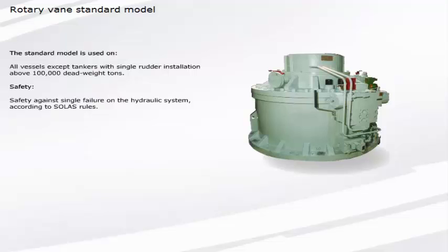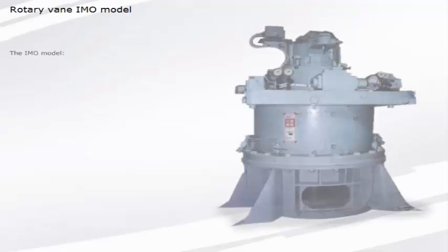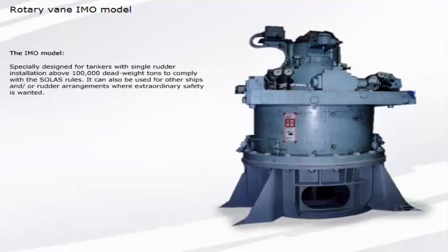The IMO model is specially designed for tankers with single rudder installation above 100,000 deadweight tons to comply with the SOLAS rules. It can also be used for other ships and rudder arrangements where extraordinary safety is wanted.